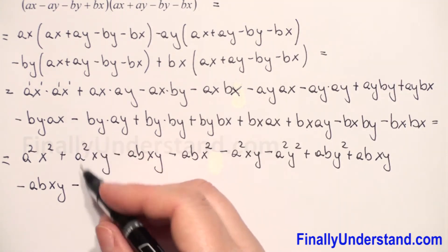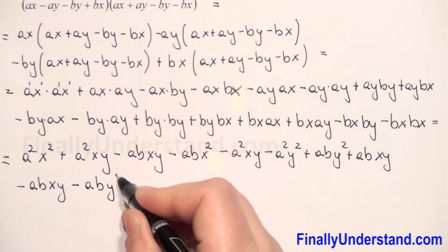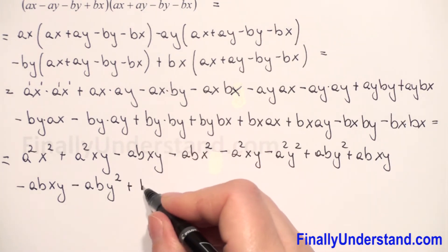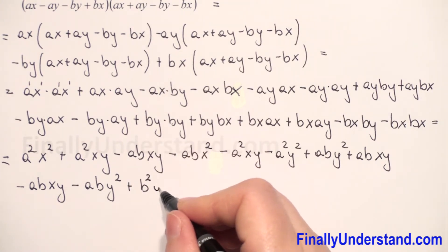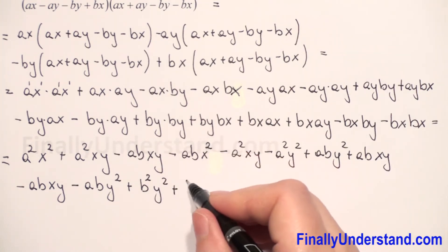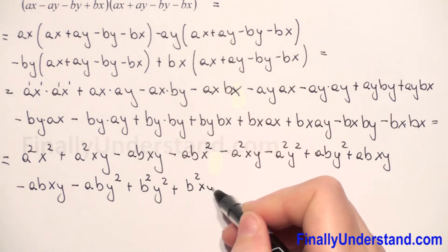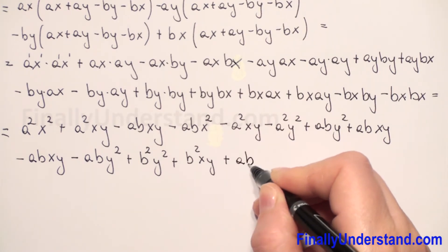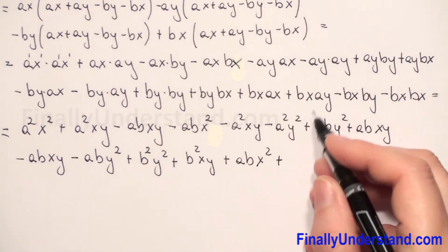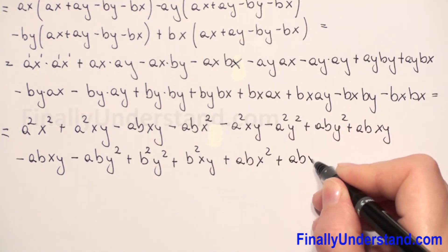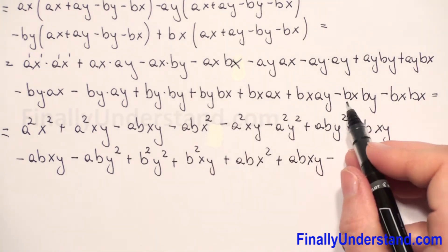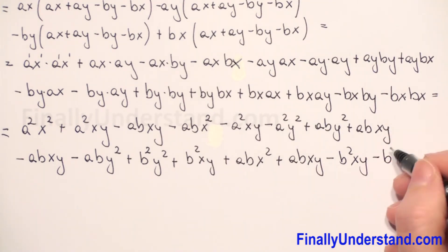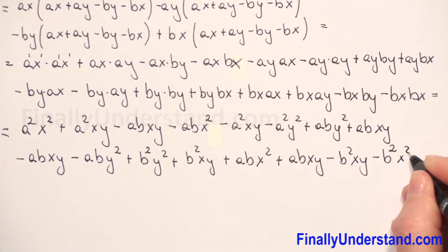And next we have negative: first will be AB, Y squared — Y times Y is Y squared. Plus BY times BY: Y times Y is Y squared. Plus B times B is B squared, and X times X gives us B squared XY. Next we have B times A, so AB, X times X is X squared. Plus BA so AB XY. Negative sign: B times B is B squared, XY. And negative sign: B times B is B squared, X times X is X squared. This is equal.